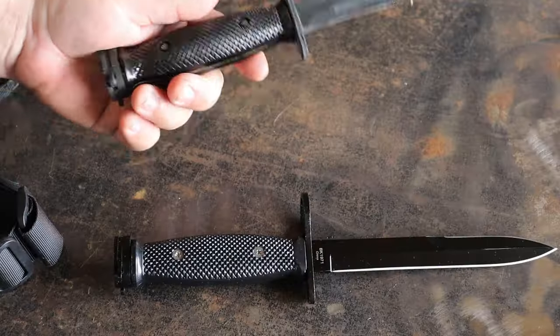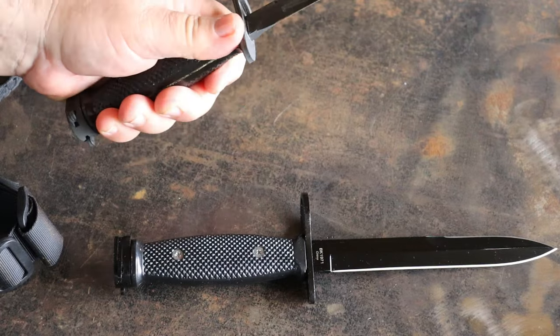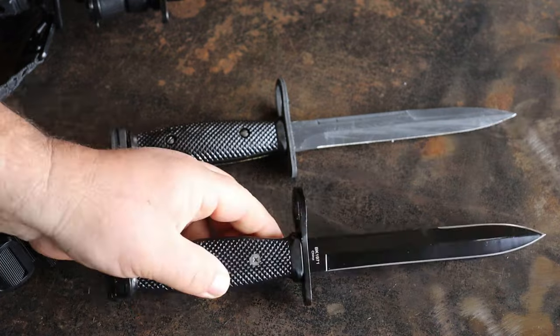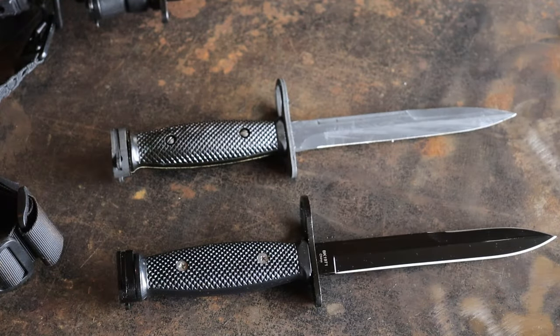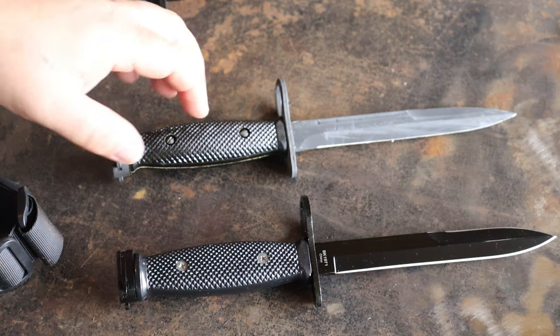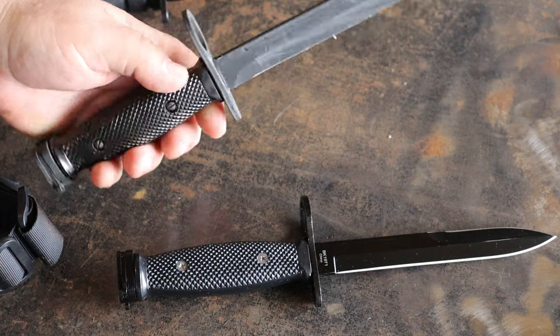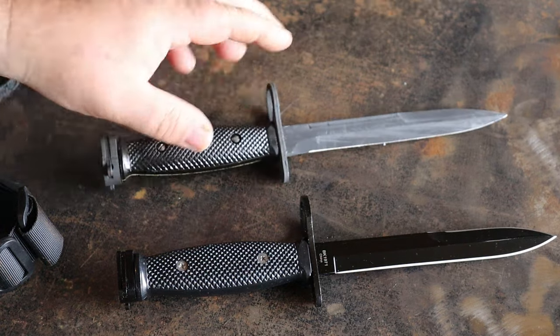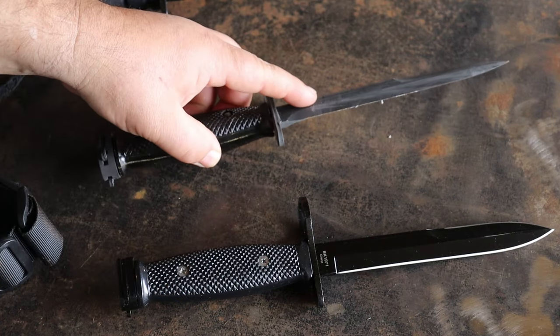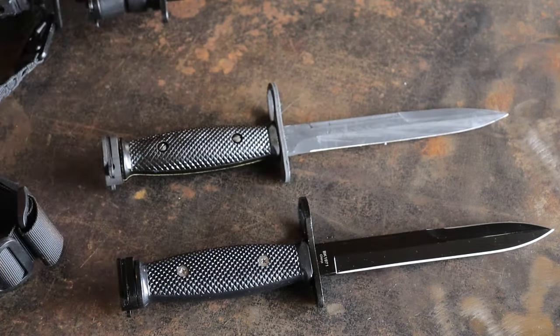First of all, GI M7s are so much higher quality. Just the weight and the feel - I don't know how to explain it other than the feel of it. It's just higher quality steel and everything. The blade profile is the same, but it's a little thicker. It's just heavier duty.